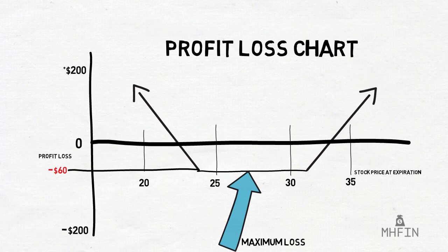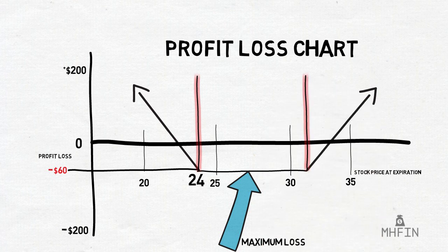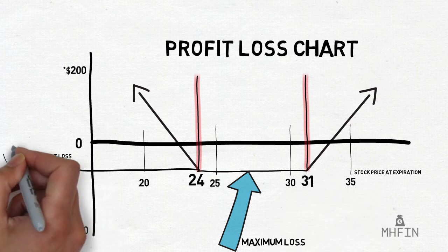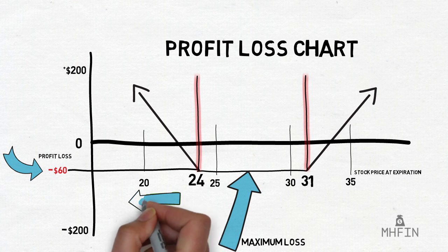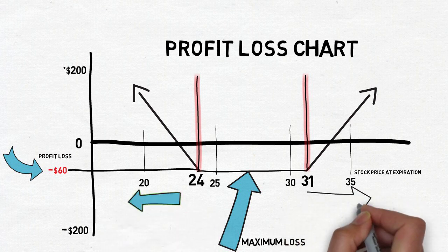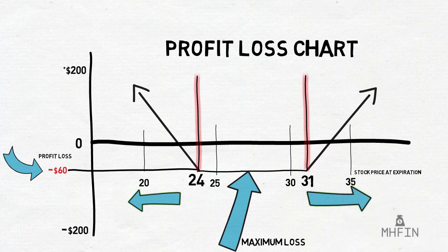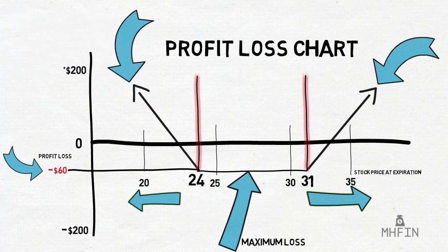We draw lines starting from the point at which the maximum loss line starts to turn upwards. This first line is at $24 and the second at $31. This represents the maximum loss space — if the stock finishes within $24 to $31, you will incur a maximum loss. You want the stock to finish underneath $24 or above $31 for money to come your way. The further you are from these points, the more money you will make. The breakeven points are at $23 and $32 — the stock must expire below $23 or above $32 to generate a profit.